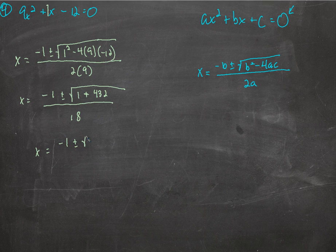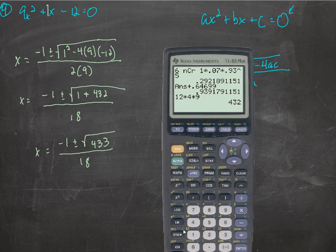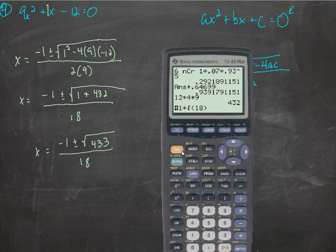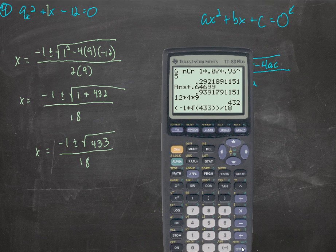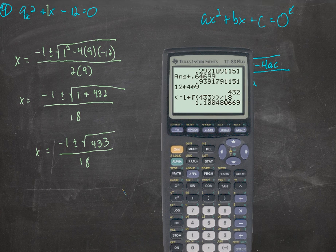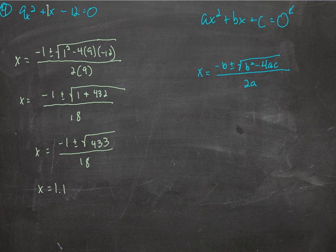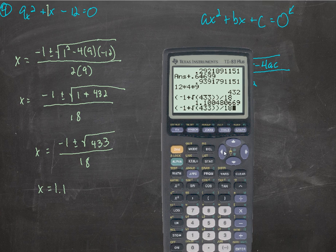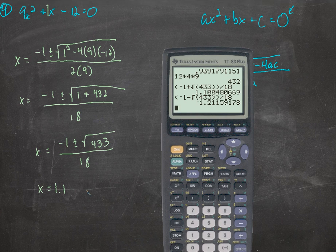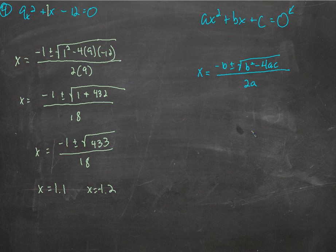x equals negative 1 plus or minus the square root of 433, over 18. We can find our decimal approximations: negative 1 plus the square root of 433 — I don't know why I put 18 there — insert 433. There we go: 1.100, so just 1.1. And when you press 2nd enter, it brings back the previous line. We'll put minus instead of plus: negative 1.2.